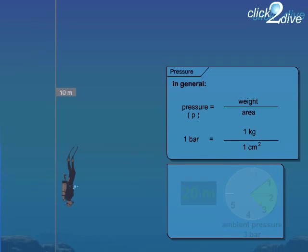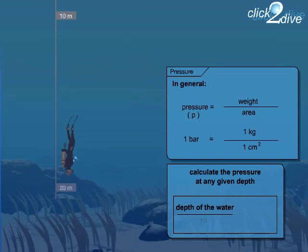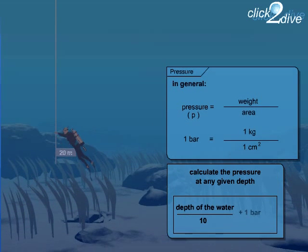In order to calculate the pressure at any given depth, we divide the depth of the water in metres by 10 and add 1 bar.